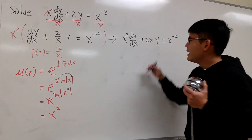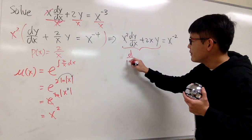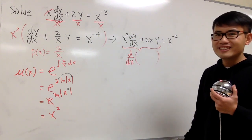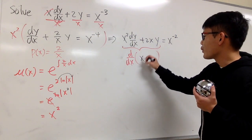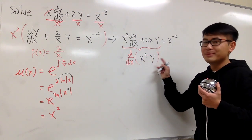All right. Here is the punchline. And this is the best part. On the left-hand side, you are going to get the derivative of a product of two functions. The first one is x squared. The second one is y. Mu of x times y.